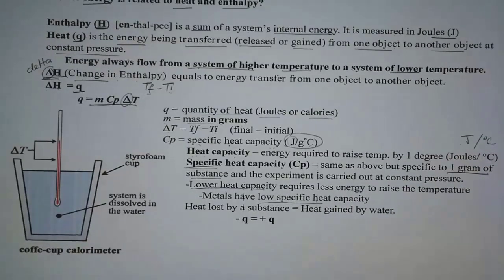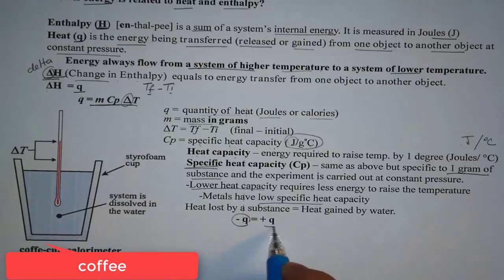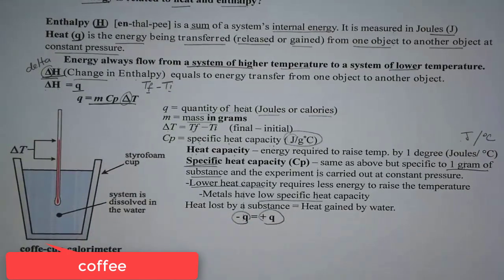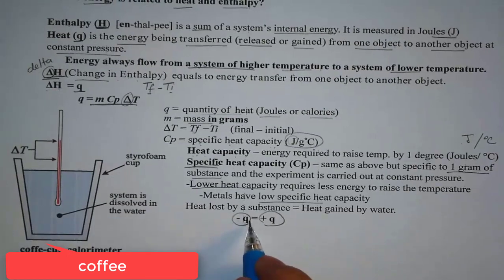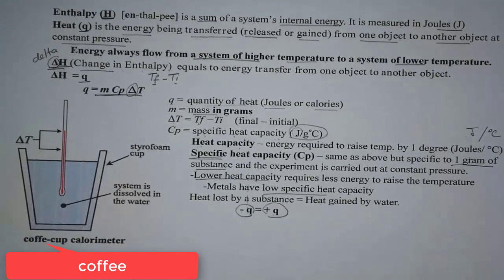You already know that the amount of energy in this universe is constant. What does that mean? That energy is neither created nor destroyed. So if that's the case, the amount of energy being lost should be equal to the amount of energy being gained. That's why we have negative Q equal to positive Q. So that's the concept behind it.